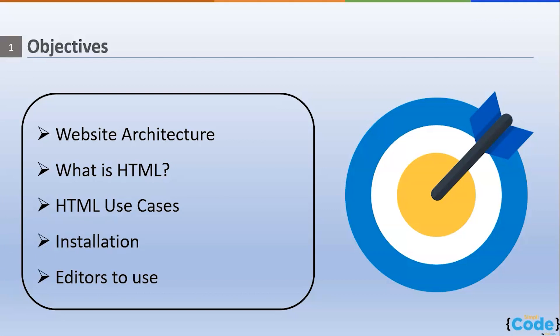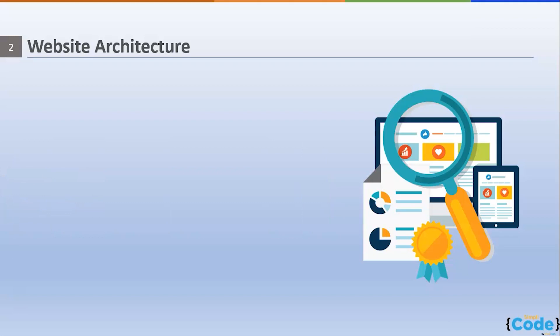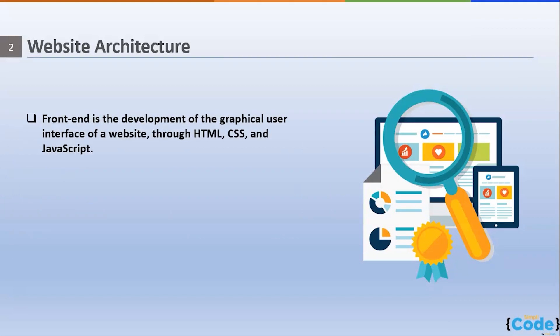Let's move on to the first topic — website architecture. Website architecture basically defines the design and structure of a website. A website contains two important parts: the front-end and the back-end. The front-end is what the user sees — we can also call it the client side of any website.